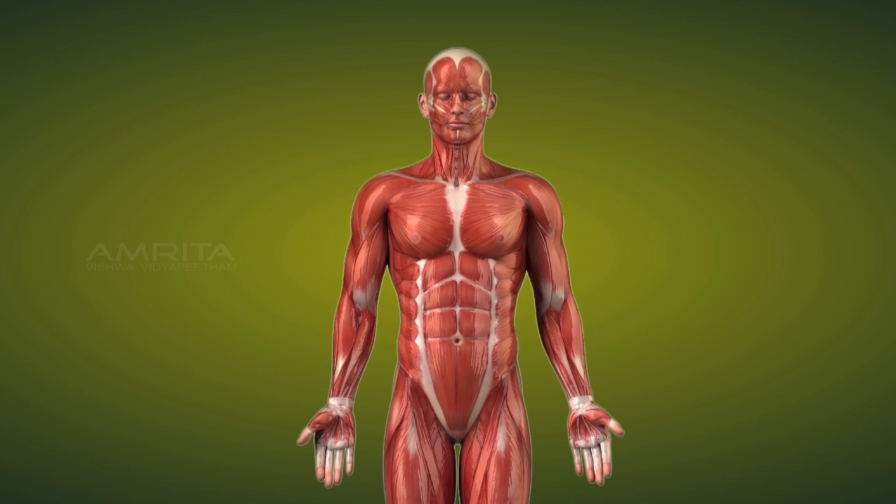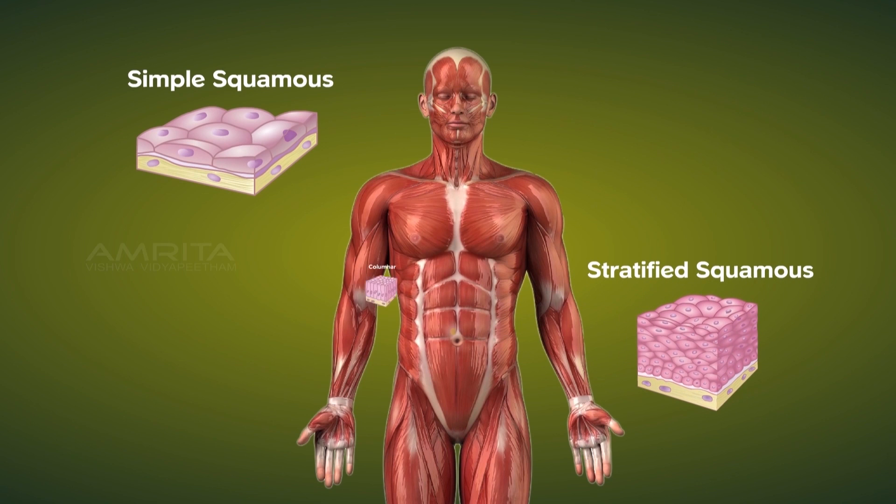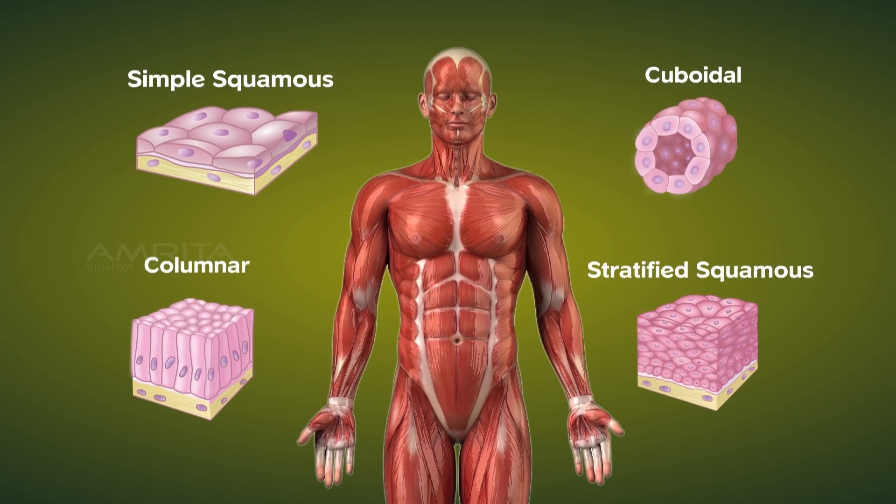Epithelial tissue is subdivided into simple squamous, stratified squamous, columnar and cuboidal epithelium based on the shape and function of their cells.